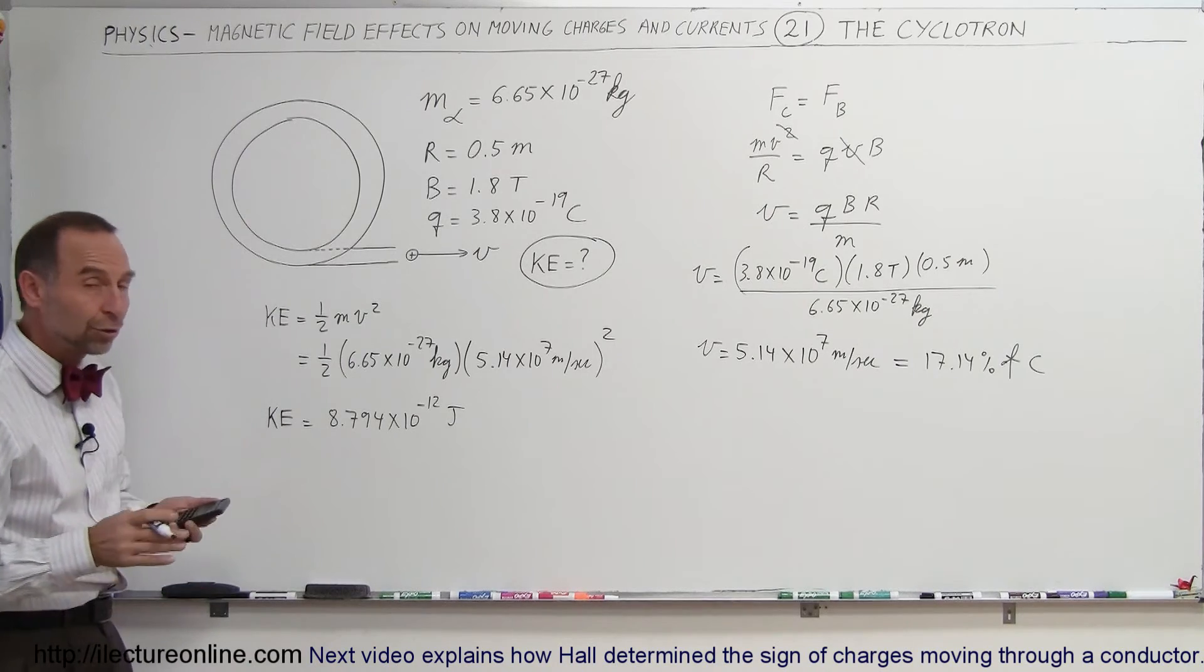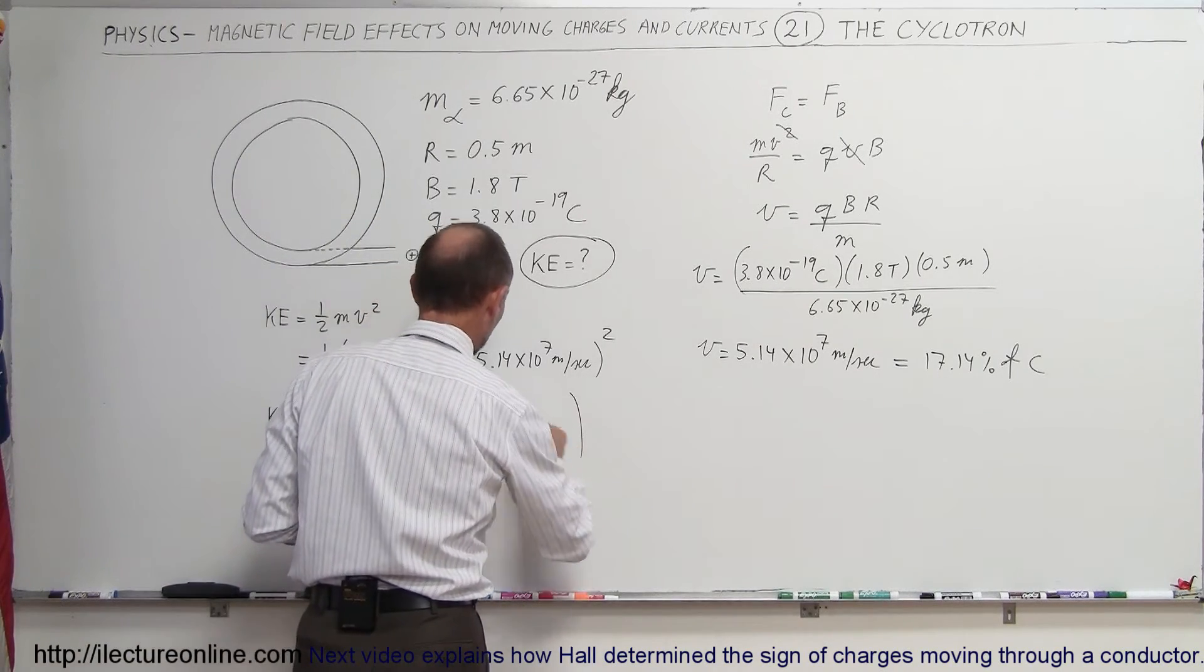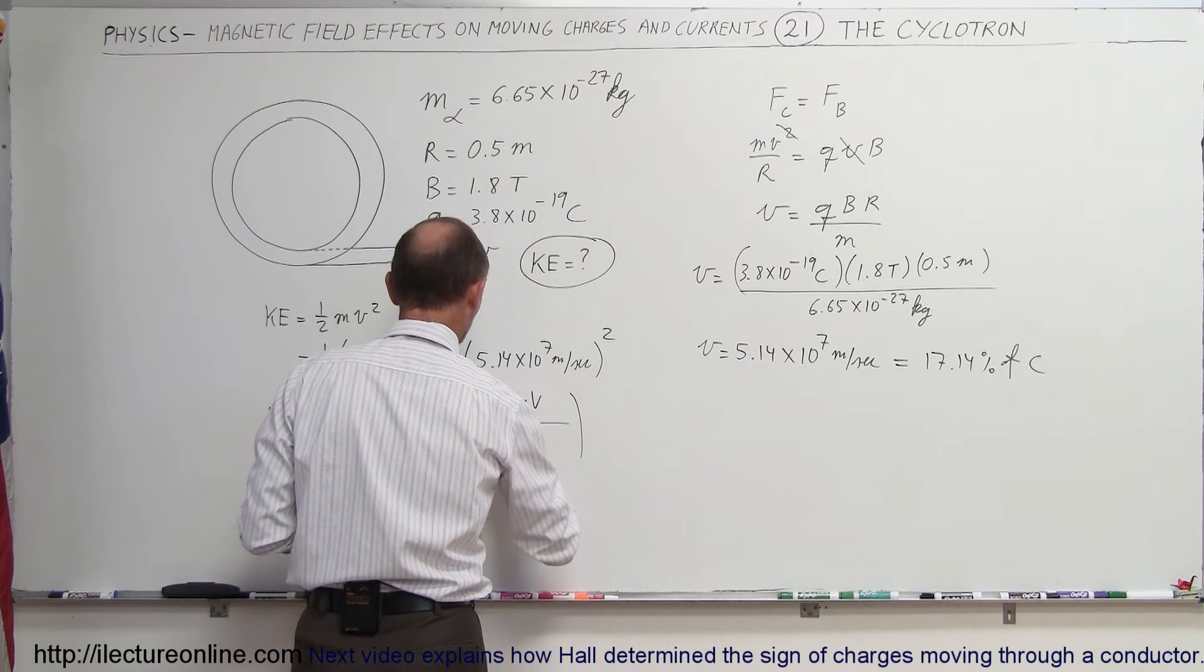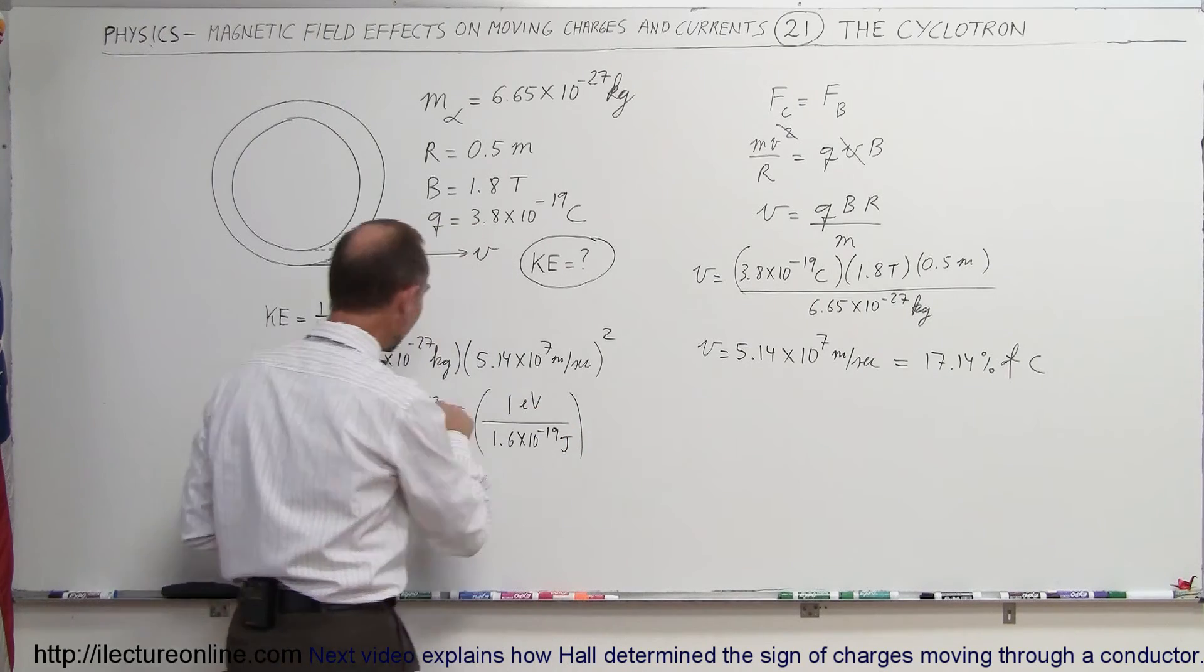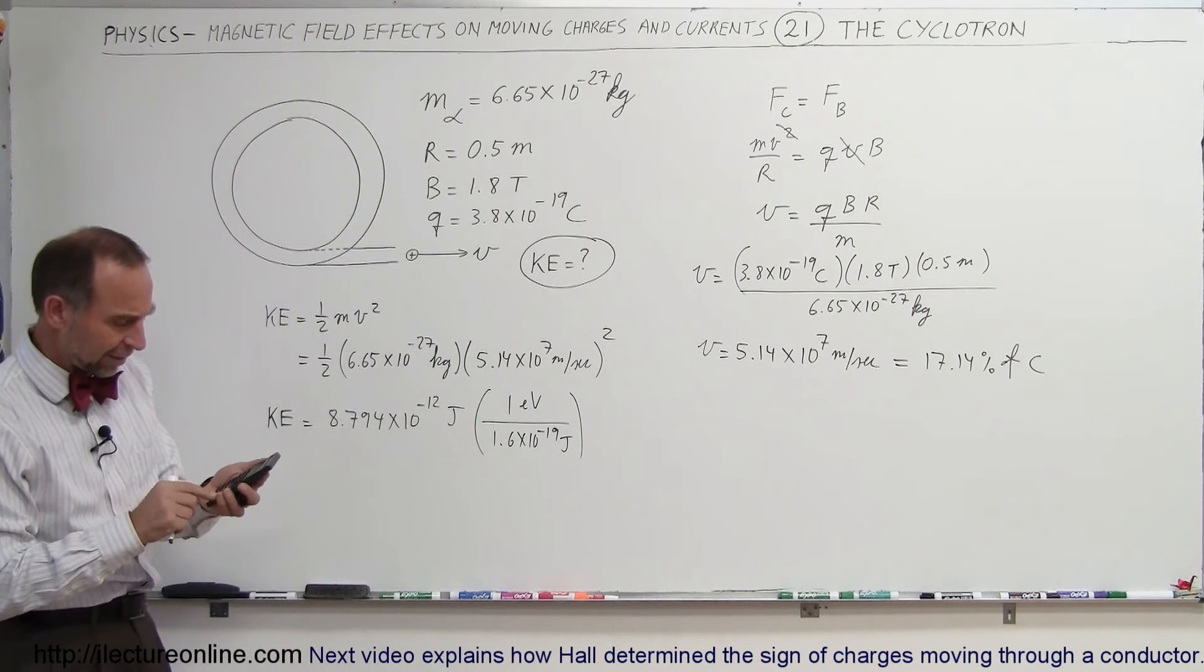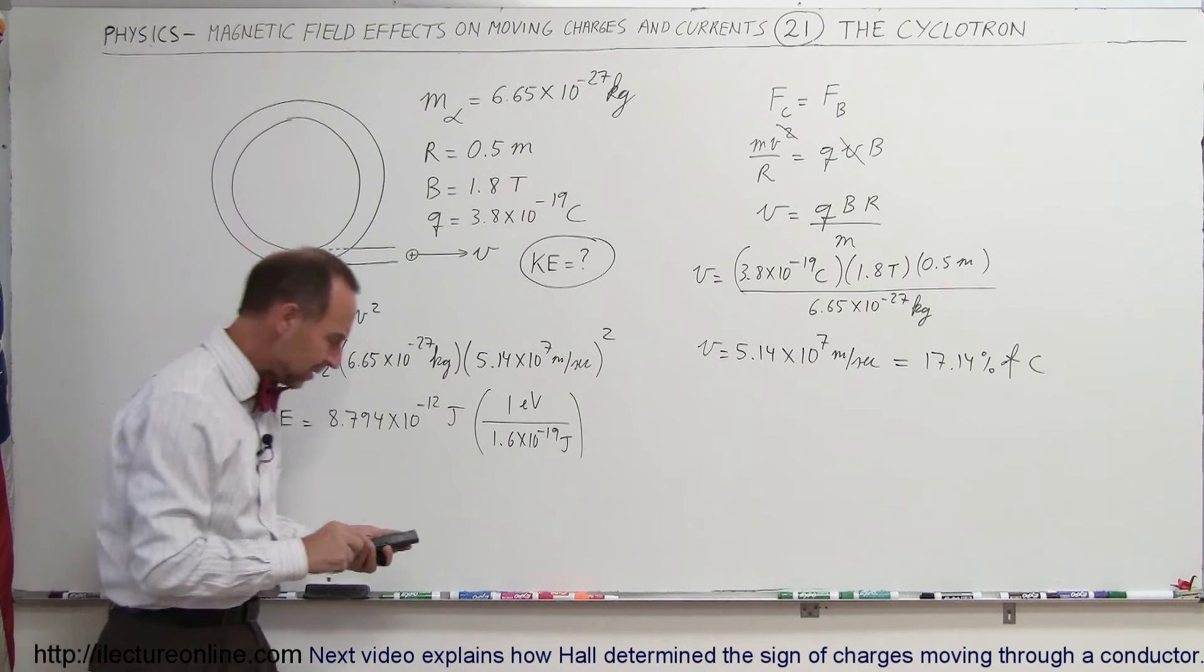How many MeVs is that? To convert that to electron volts, we multiply times the ratio of 1 electron volt per 1.6 times 10 to the minus 19 joules. So if we divide this by 1.6 e to the minus 19, we get...